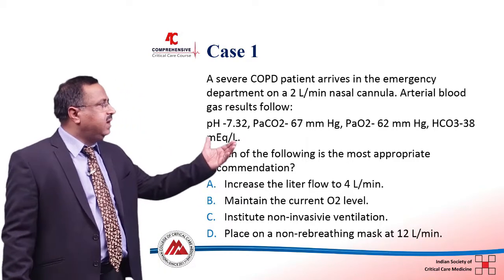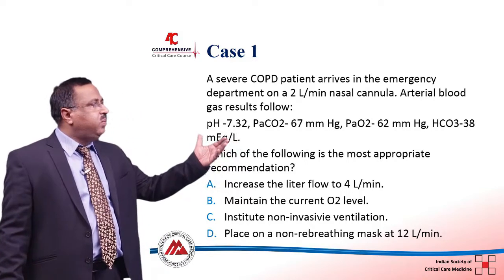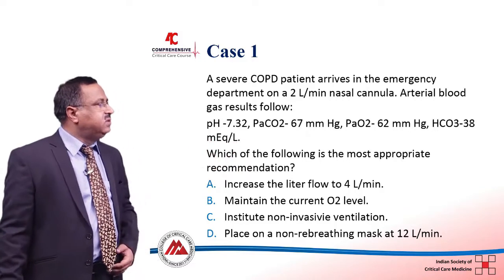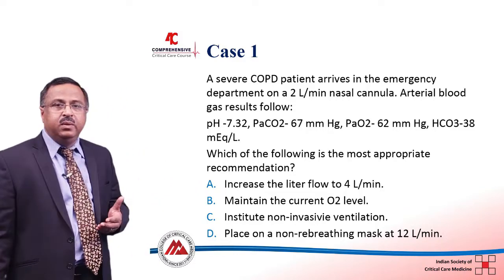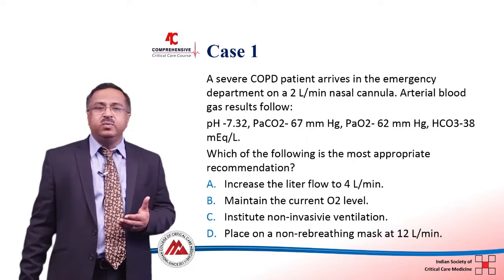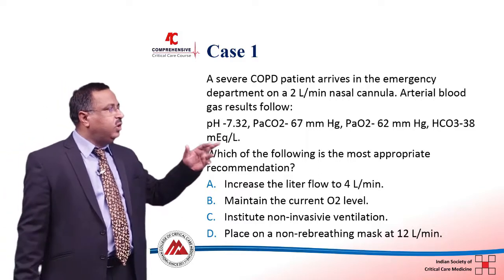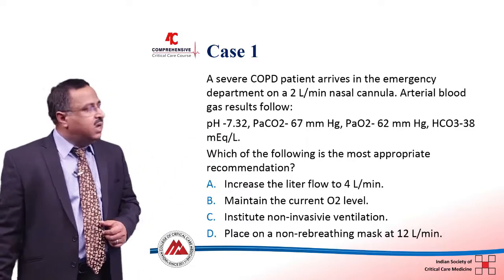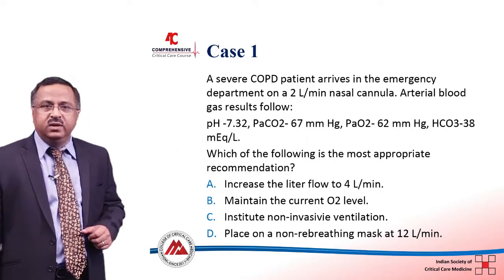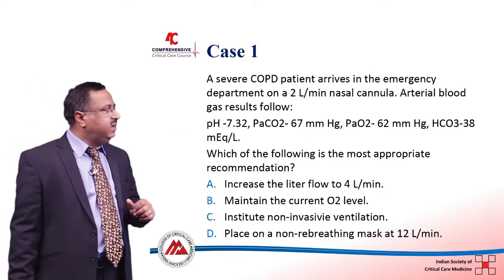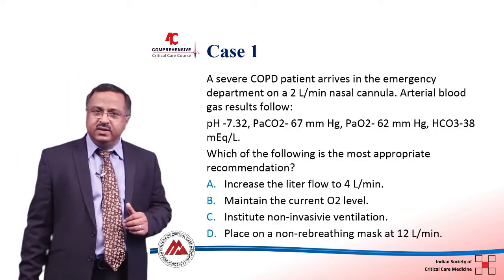We start with a case. A severe COPD patient arrives in the emergency department on a 2-liter per minute nasal cannula. His arterial blood gas results show that pH is 7.32, PCO2 is 67 mmHg, PO2 is 62 mmHg, and bicarbonate is 38 mEq/L. Now which of the following is the most important recommendation? The four choices are: increasing the liter flow of oxygen to 4 liters per minute, maintain the current oxygen level, institute non-invasive ventilation, or place on a non-rebreathing mask at 12 liters per minute.